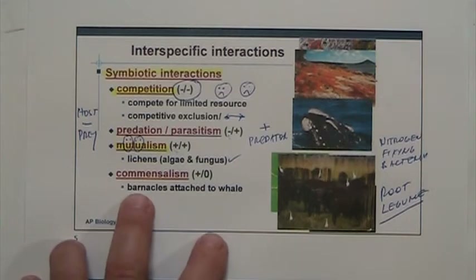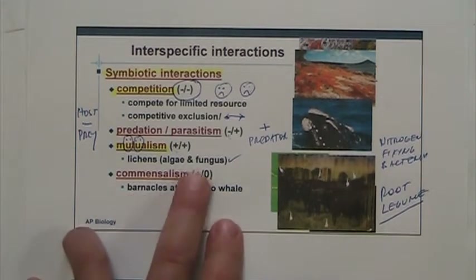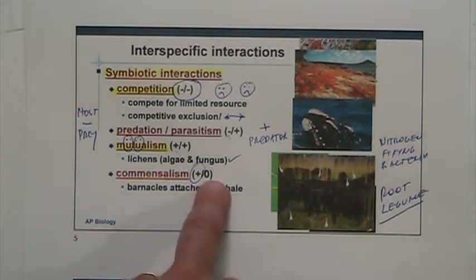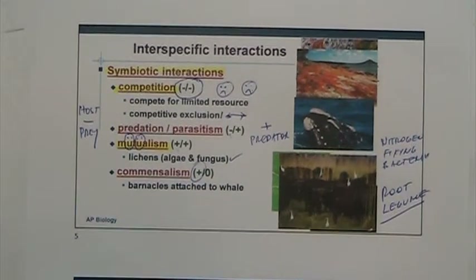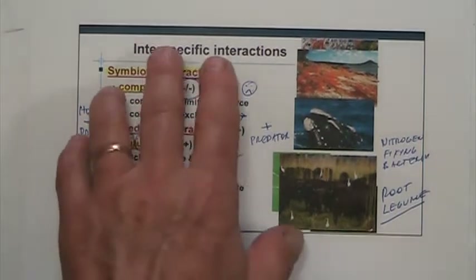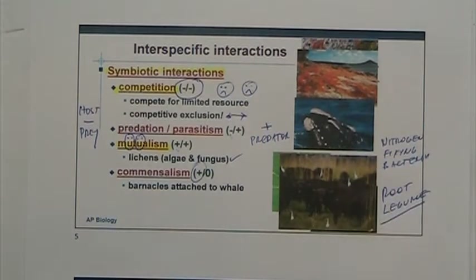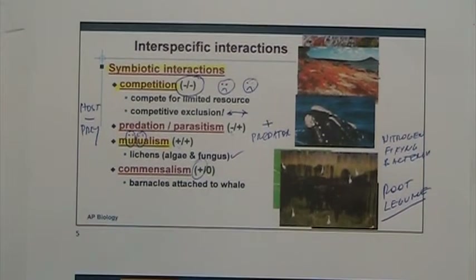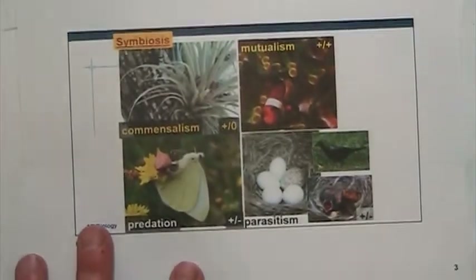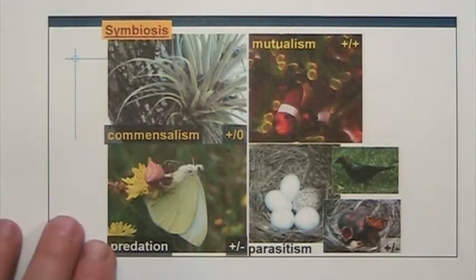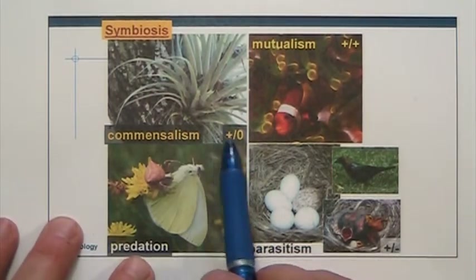Finally, we have commensalism. That's another interaction where one of the organisms is positively impacted and the other one is kind of neutral — doesn't really have a positive or a negative impact. Remember that these positives and negatives are going to have a cost, and you're going to either increase or decrease your fitness level because of these interactions.